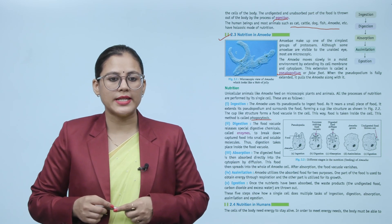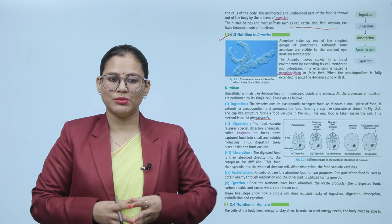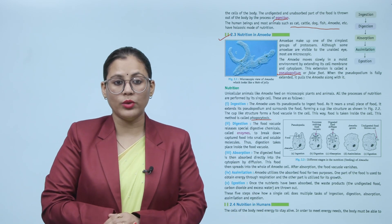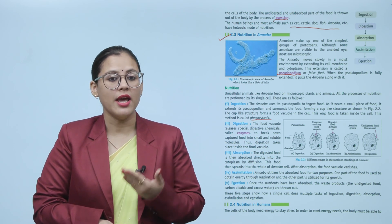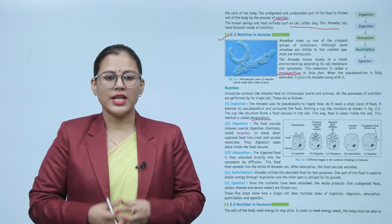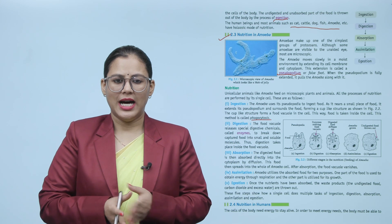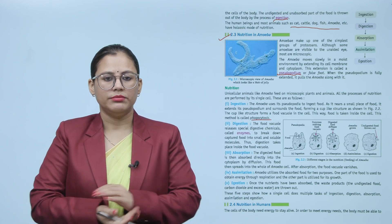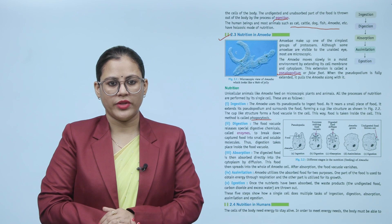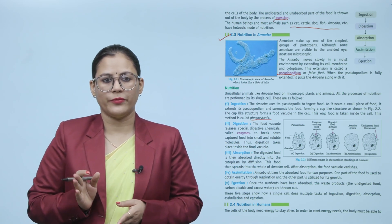Number two: Digestion. The food vacuole releases special digestive chemicals called enzymes to break down captured food into small and soluble molecules. The digestion takes place inside the food vacuole. Number three: Absorption. The digested food is then absorbed directly into the cytoplasm by diffusion. This food then spreads to the whole of the amoeba cell. After absorption, the food vacuole vanishes.